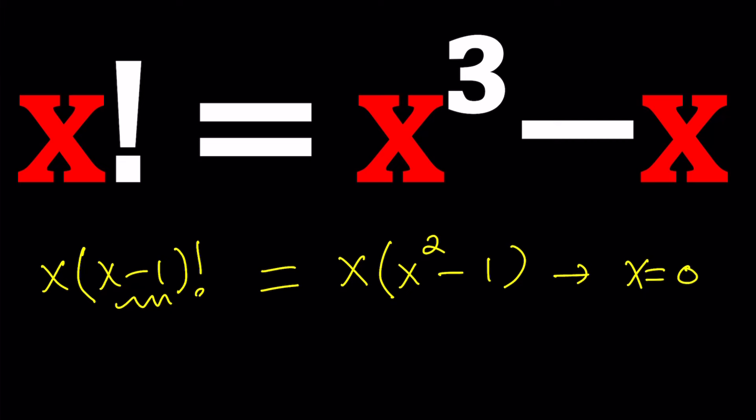And you can tell that it's not going to work if you just plug in 0 in the very original equation. On the left-hand side, you get 0 factorial, which is 1. On the right-hand side, you get 0 cubed minus 0, which is 0. And obviously, 1 does not equal 0.